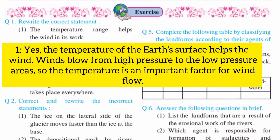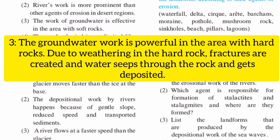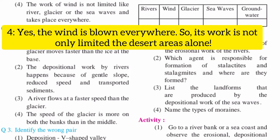First one: the temperature range helps the wind in its work. Second: river work is more prominent than other agents of erosion in desert regions. Third: the work of groundwater is effective in the area with soft rocks. Fourth: the work of wind is not limited like river, glacier, or the sea waves, and takes place everywhere.